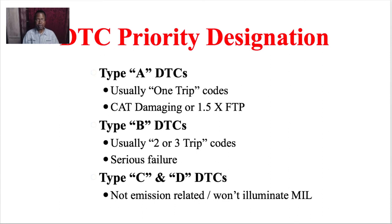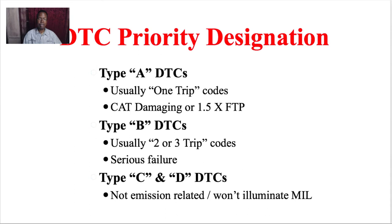There are Type A, Type B, and Type C/D codes. A Type A code is usually a one-trip code — as soon as the problem is detected it turns on the light, such as a catalyst-damaging misfire. If you see the check engine light blinking, that means it's a severe misfire that can damage the catalytic converter — that would also be a Type A code.